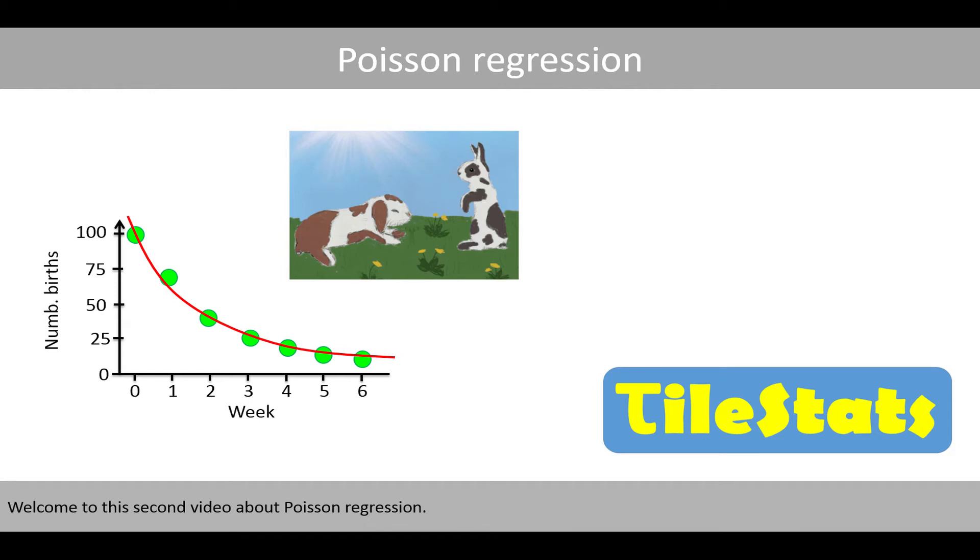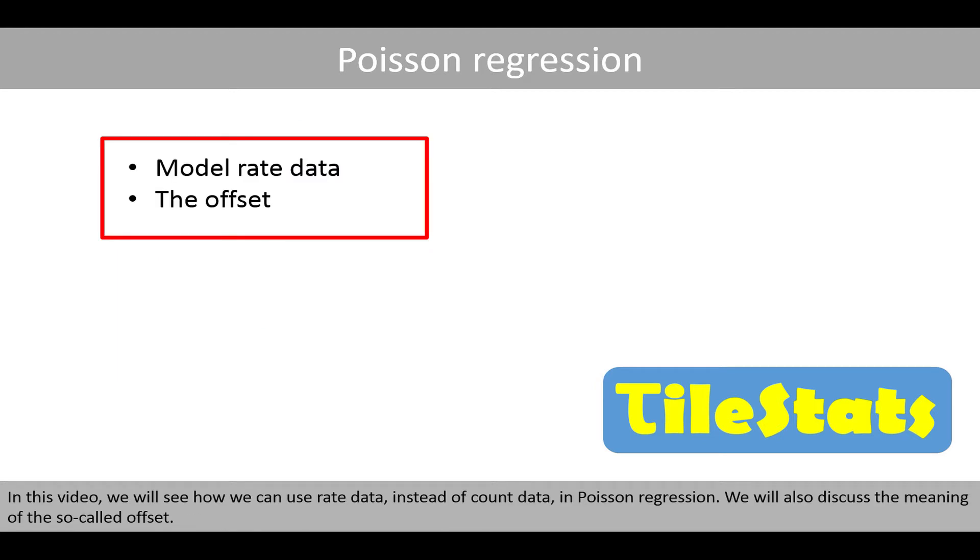Welcome to this second video about Poisson regression. In this video we'll see how we can use rate data instead of count data in Poisson regression. We'll also discuss the meaning of the so-called offset.